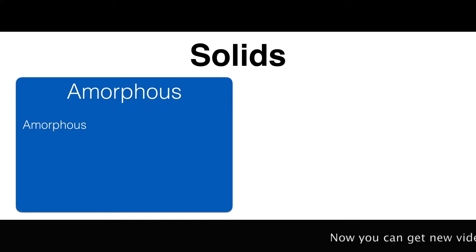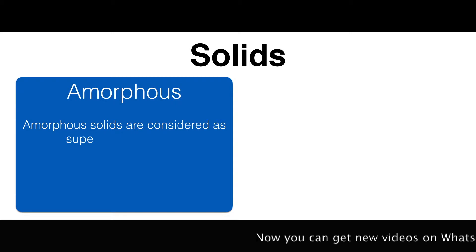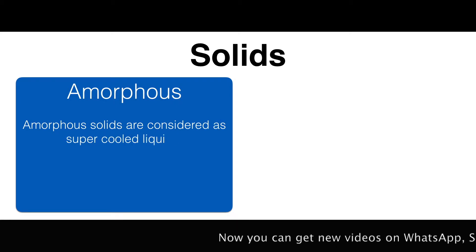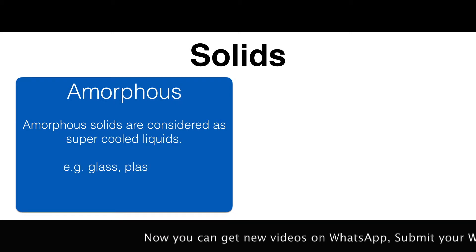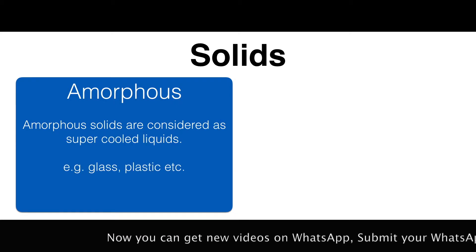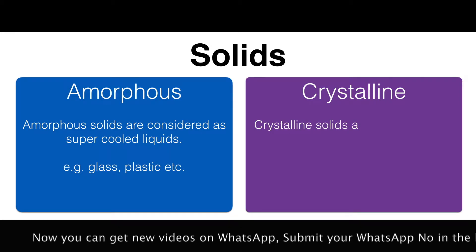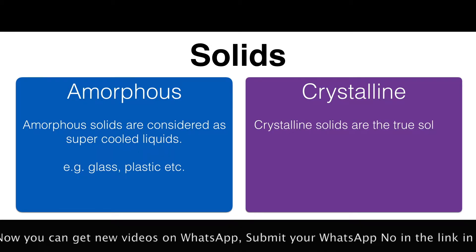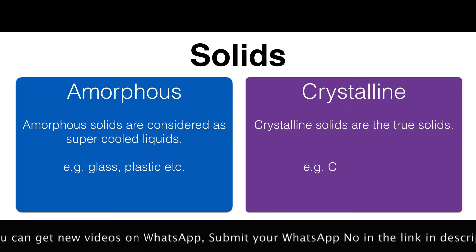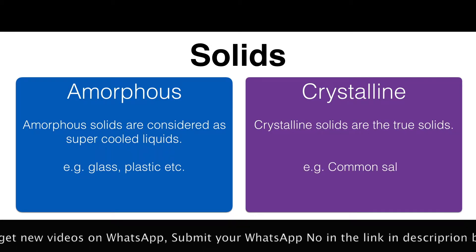Amorphous solids are considered as supercooled liquids — for example, glass, plastic, etc. Crystalline solids are the true solids — for example, common salt.